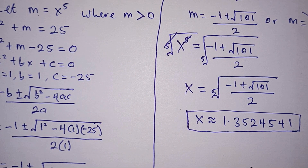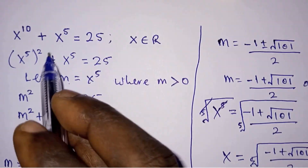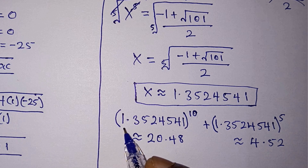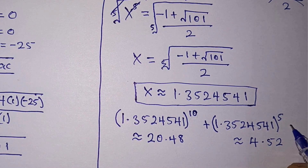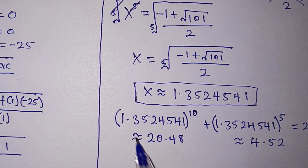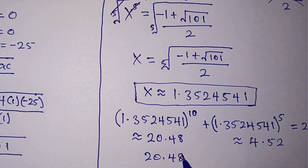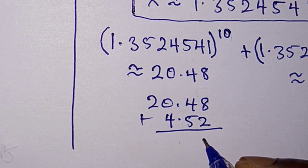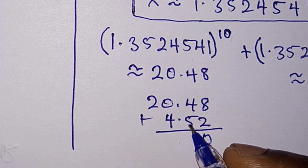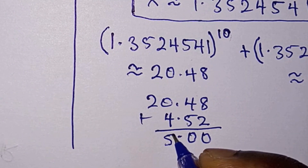Now let's verify our answer by substituting this value of x into the original equation. We have 1.3524541 to the power 10 plus 1.3524541 to the power 5, which must equal 25. Approximately, the first term gives 20.48 and the second gives 4.52. Adding them: 20.48 plus 4.52 — 8 plus 2 is 10, carry 1; 4 plus 5 is 9 plus 1 is 10, carry 1; giving us 25. So we confirm 25 as our final answer.